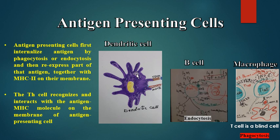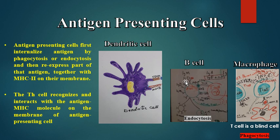Antigen presenting cells first internalize antigen by phagocytosis, as in the case of dendritic cells and macrophages, or by endocytosis, as in the case of B-cells. B-cells have membrane-bound IgM and IgD, which capture and internalize the antigen.